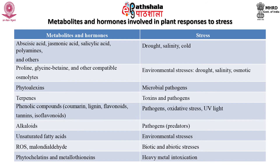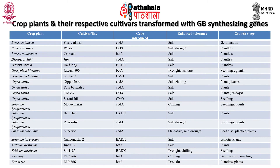Here is the list of different metabolites and hormones involved in plant responses to different kinds of stressors. Some of the common metabolites and hormones are abscisic acid, salicylic acid, jasmonic acid, polyamines, proline, phytoalexins, terpenes, phenolic compounds, alkaloids, ROS, and some unsaturated fatty acids.